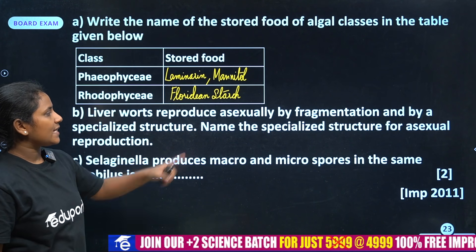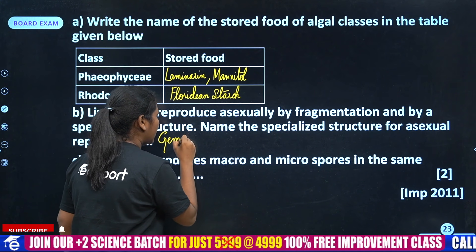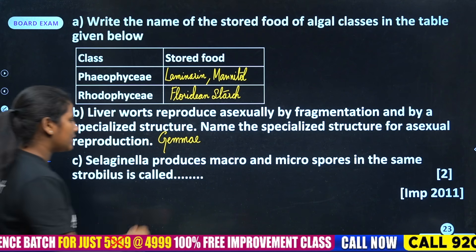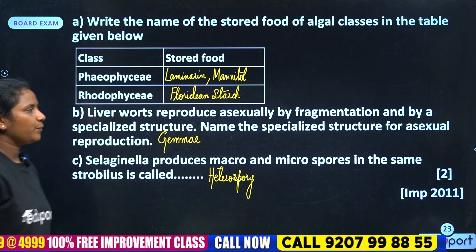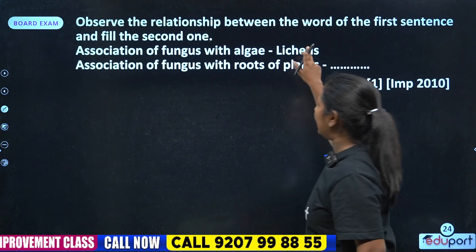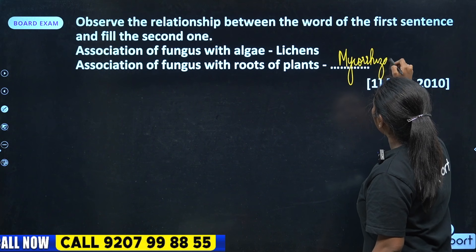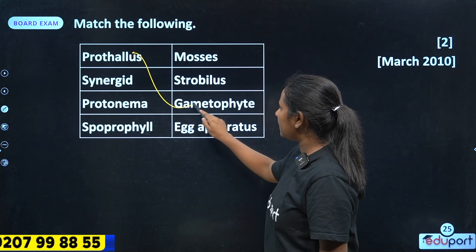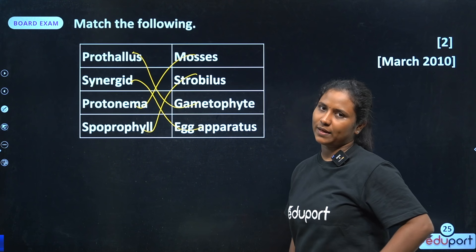Liverworts reproduce asexually by fragmentation and by a specialized structure — the Gemmae. Selaginella produces macro and microspores in the same strobilus — called heterospory. Observe the relationship: Fungus + Algae = Lichen; Fungus + roots of higher plants = Mycorrhiza. Prothallus is gametophyte; Protonema — Mosses; Sporophyll is strobilus.